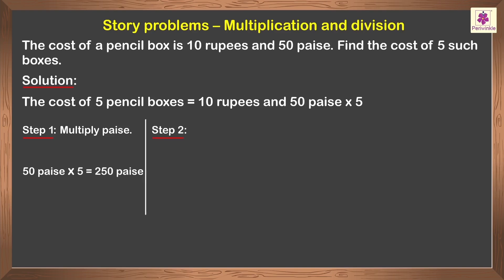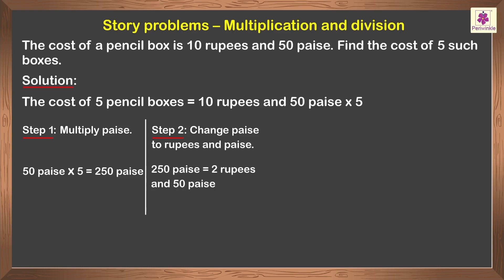Step 2: Change paise to rupees and paise. Thus, we get 250 paise is equal to 2 rupees and 50 paise. Step 3: Multiply rupees. 10 rupees multiplied by 5 is equal to 50 rupees.